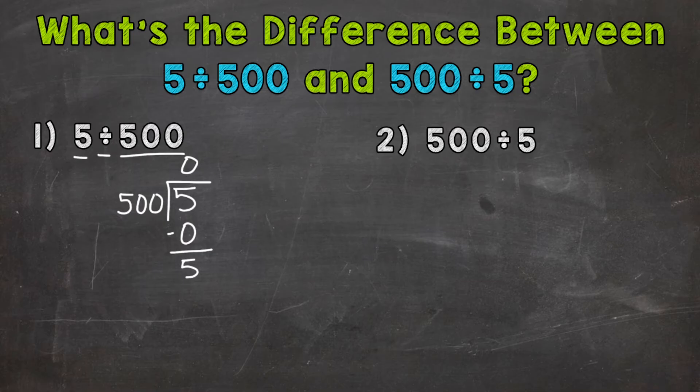But we don't have anything to bring down in order to continue through our process. So what we do, we place a decimal after the 5. That does not change the value of that 5. We can place a decimal after a whole number without changing the value. And what we'll do, we'll place a 0 in the 10th place. Again, we're not changing the value of the 5 or the problem overall. Now we have something to bring down.